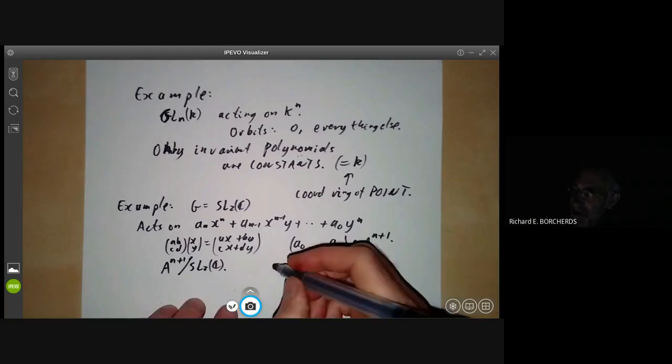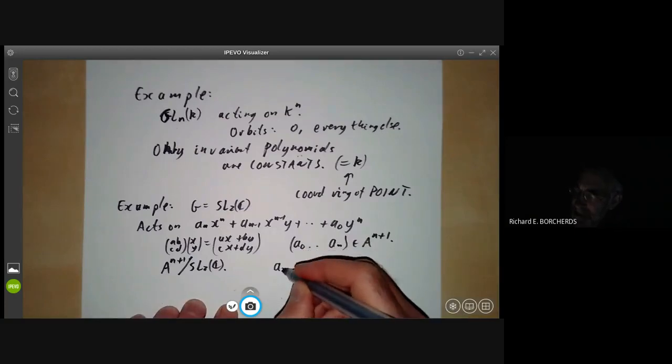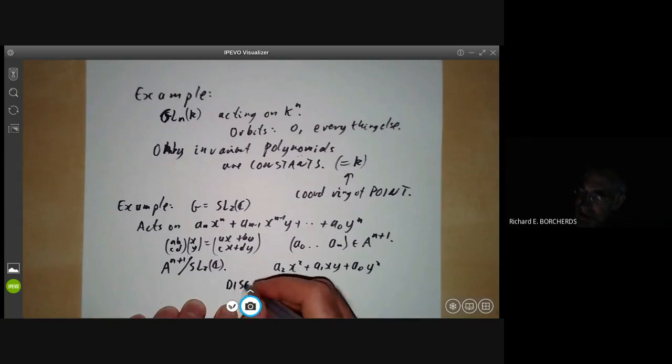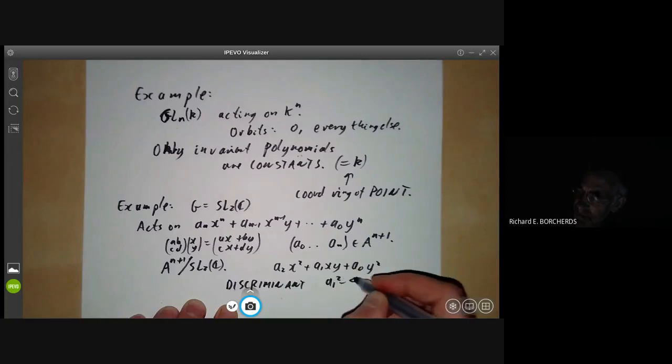A simple example: if we take a_2*x^2 + a_1*xy + a_0*y^2, then a typical invariant is the discriminant, which is a_1^2 - 4*a_0*a_2, or b^2 - 4ac in usual notation for quadratic equations.